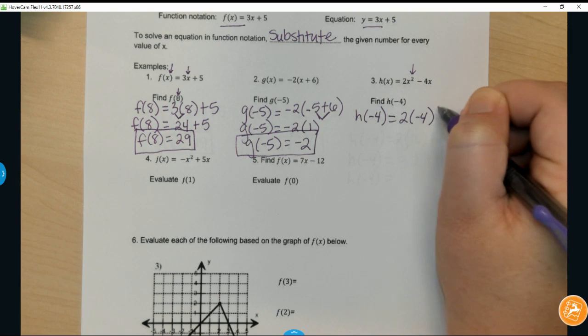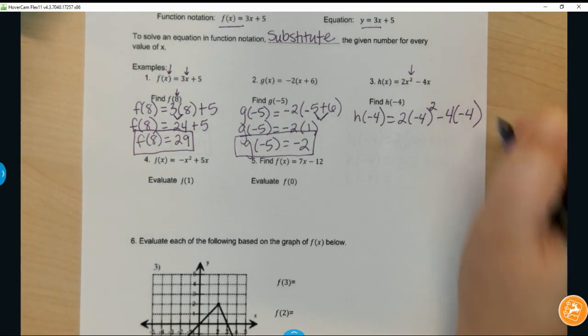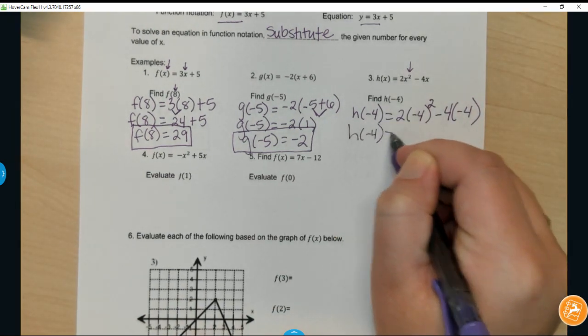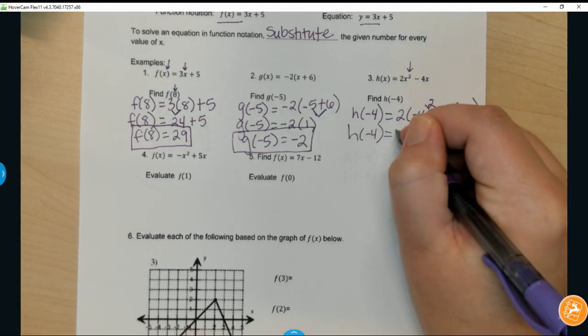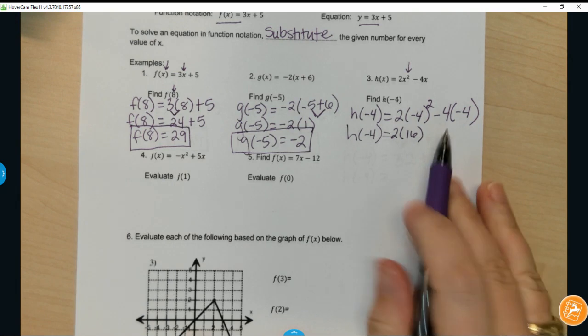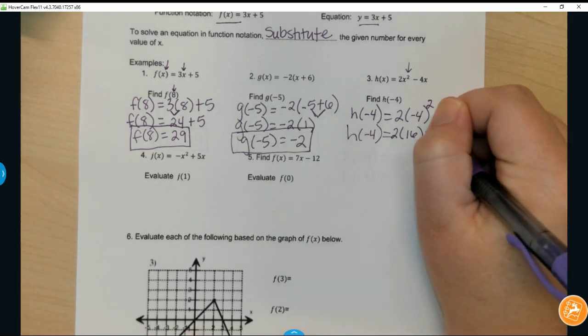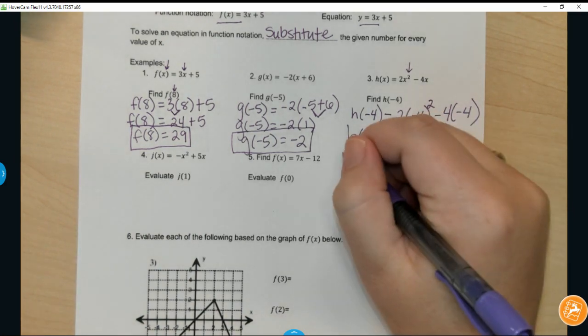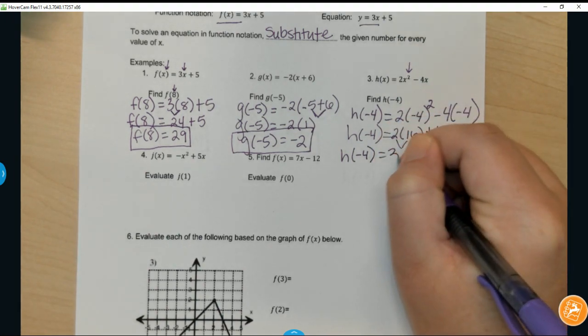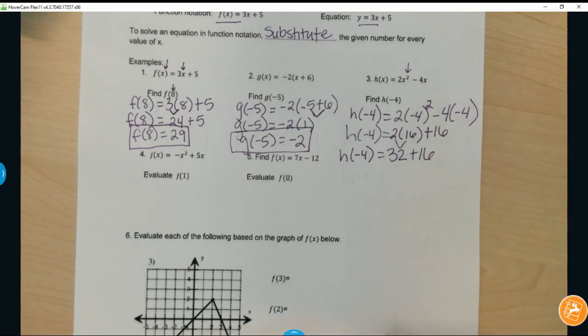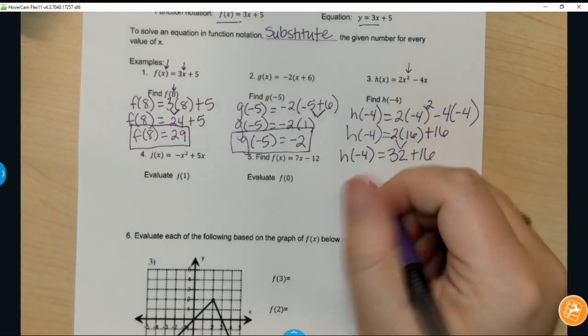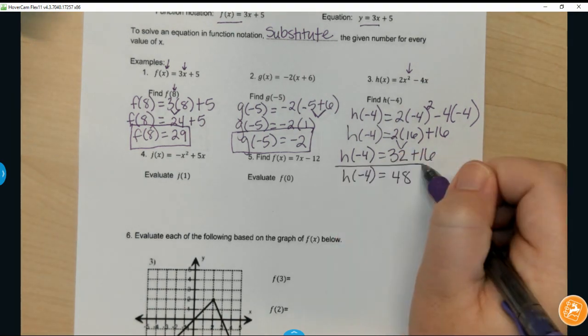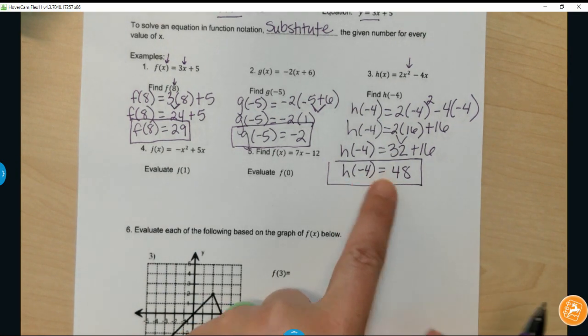The very first thing I want to do is take care of my exponents. So negative 4 squared will give me 16. Negative 4 times negative 4 will give me a positive 16. So then that becomes 2 times 16, which is 32. 32 plus 16 is 48. So h(-4) equals 48. Plug in negative 4, get out 48.